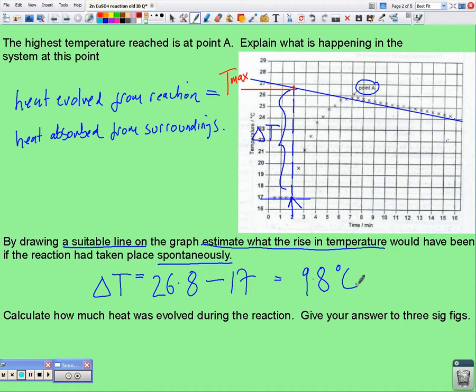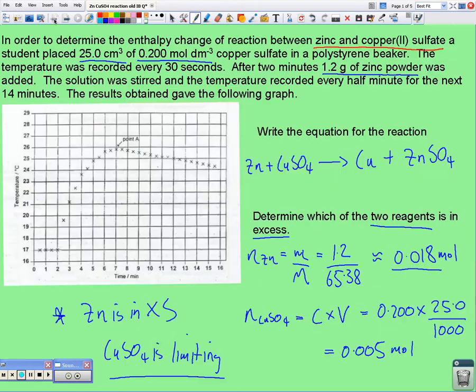So, calculating how much heat was evolved during the reaction, well, Q equals the mass of the solution, well, the mass was 25.0 cc's.